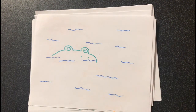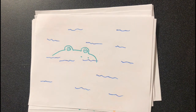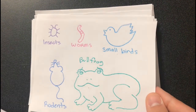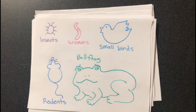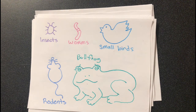Bullfrogs have a habit of eating anything they can fit in their mouths, ranging from food such as insects and worms, to small birds, mammals, and even other amphibians. Not even their own kind is safe, as cannibalism is quite common among bullfrog populations.